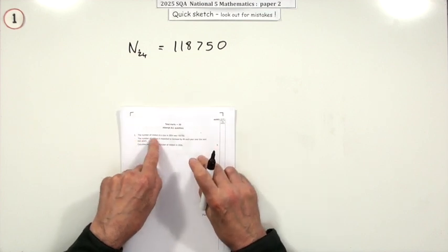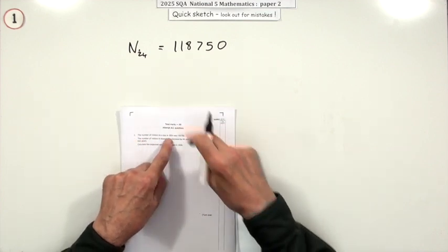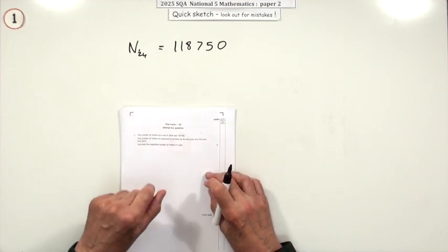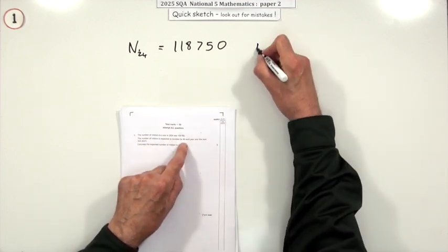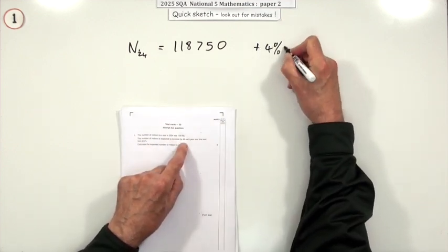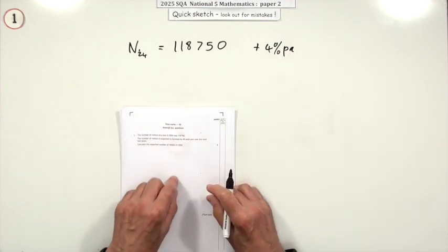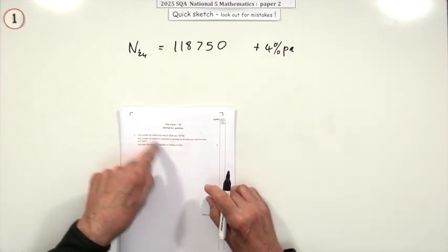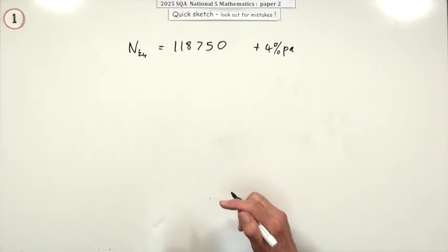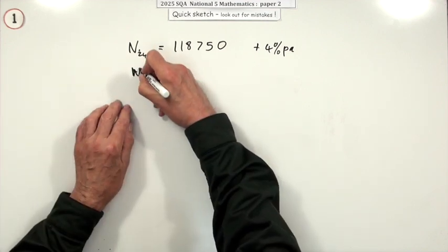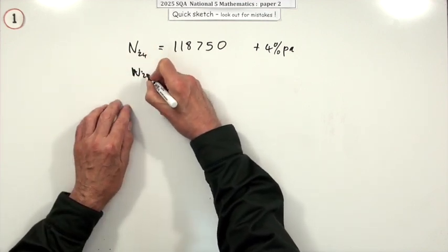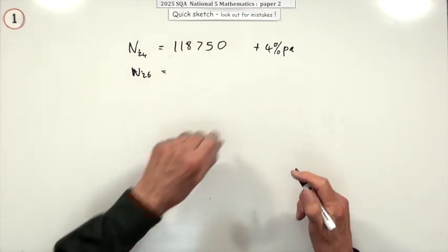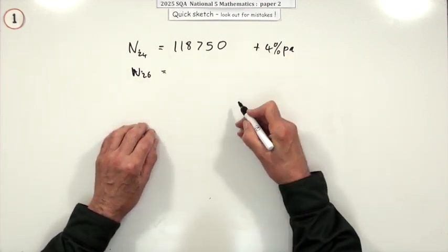So question one then. The number of visitors to a zoo in 2024 was 118,750. It's expected to increase by 4% each year over the next two years. It tells you two years. Calculate the expected number of visitors in 2026. Well you don't need to figure out how many years it is from 24 to 26 because it just told you. Well it's just apply that percentage twice.